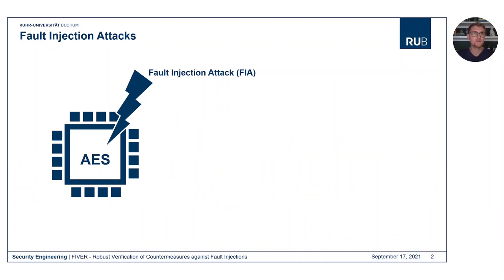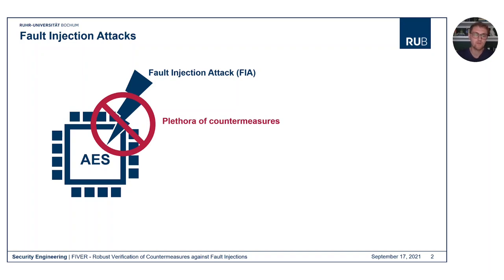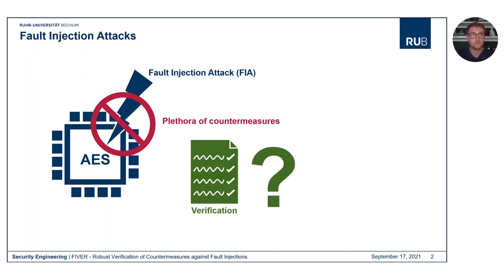As implementations of cryptographic algorithms can be broken by active fault injection attacks, researchers came up with a plethora of countermeasures. However, the verification process of such countermeasures is often a manual and error-prone task. Therefore, we propose a fault verification framework that works on a gate-level netlist in order to analyze countermeasures against fault injection attacks designed for FPGAs and ASICs.